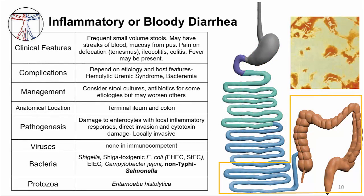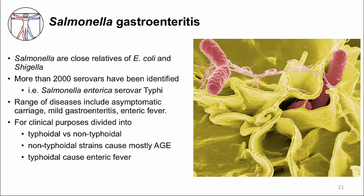Next, I want to discuss Salmonella, specifically non-typhi Salmonella. Salmonella are closely related to E. coli, and more than 2,000 strains have been identified based on antibody typing, identified as a serovar. The majority are non-typhi Salmonella and cause mostly watery and bloody diarrhea. A few strains — Salmonella typhi and Salmonella paratyphi — cause a completely different syndrome called typhoid fever or enteric fever, which will be discussed in a different video.